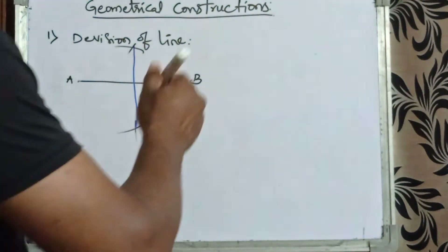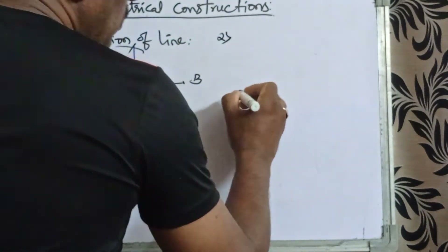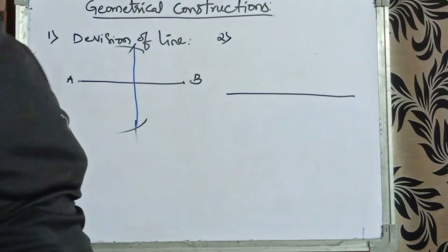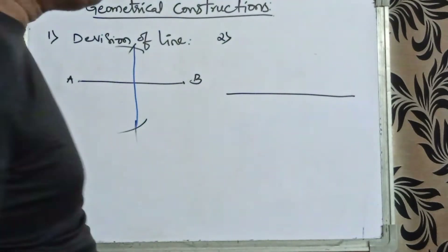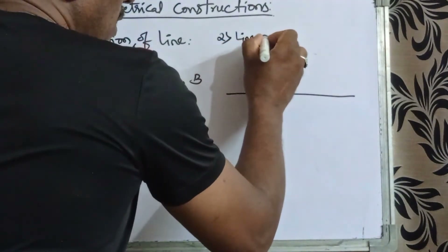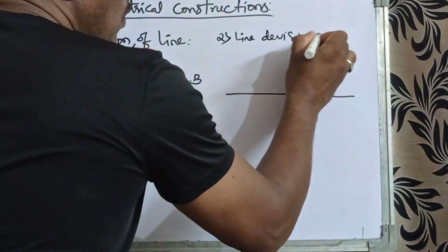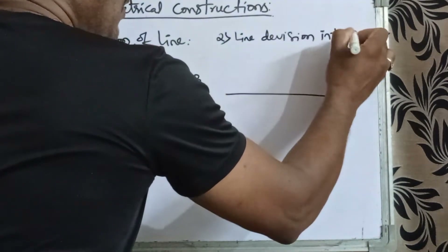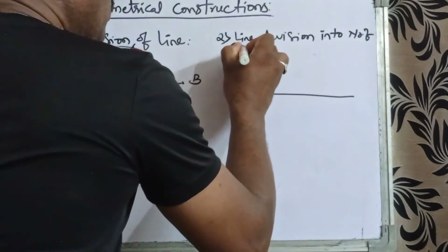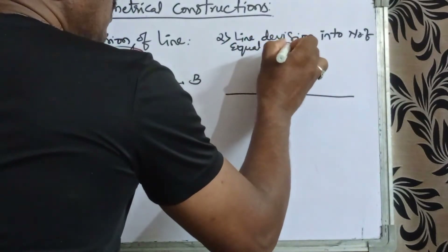Next, we can go for dividing a line into any number of equal parts — for example, three, four, five, or six equal parts.